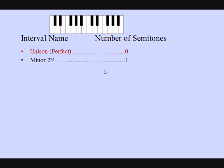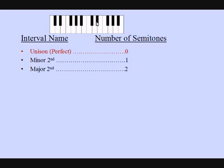If we have two notes that are just one semitone away from each other — for example, D and E flat — those two notes are making a minor second. Now suppose we have C sharp and D sharp. If we count the semitones between them, we count one, two. That means we are facing a major second.